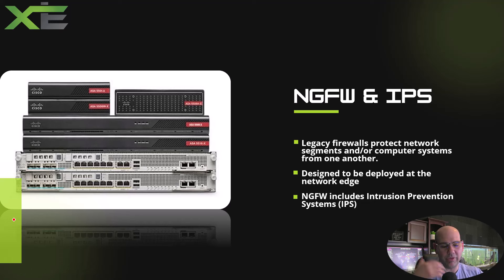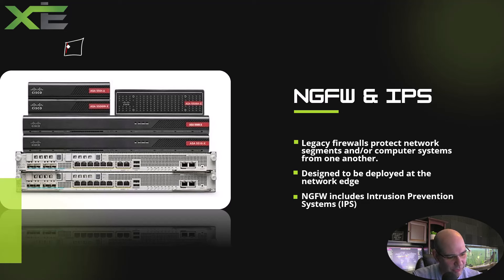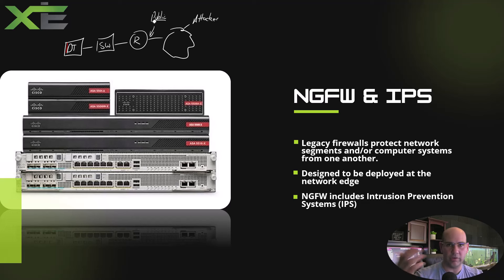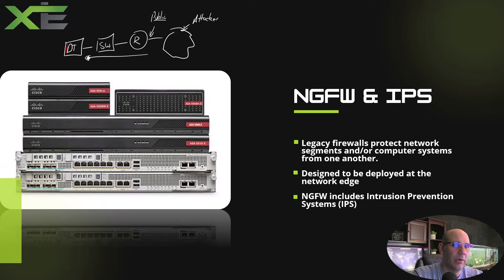Going back to where firewalls are placed on the network — imagine you have a desktop connected to a switch, and that switch is connected to a router because we may have multiple networks, and that router is connected to the internet. Hanging out on the internet is an attacker. Without a firewall, that attacker could find your organization's public IP address and send an attack directly into your network to your desktop — and be able to compromise it, install software, compromise your data.